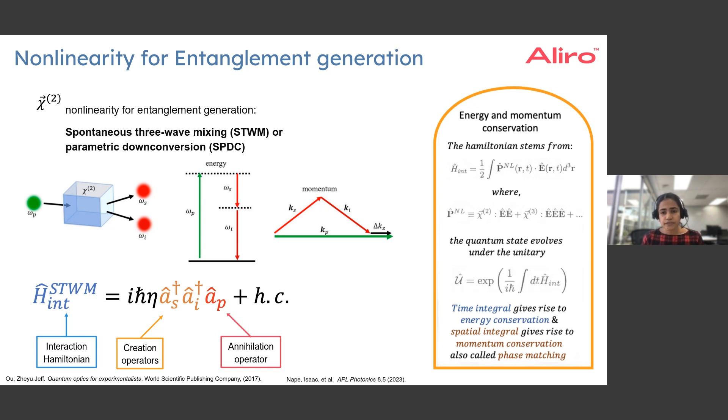Here we observe there are two integrals that come into picture. The first one is the integral over space in the expression for the Hamiltonian. This integral essentially gives rise to momentum conservation, and the second integral, which is the integral over time, gives rise to energy conservation.